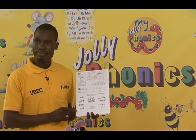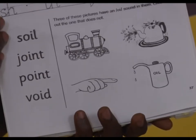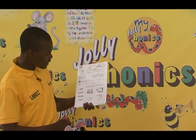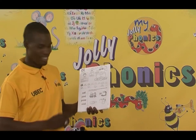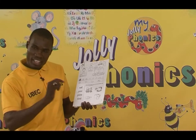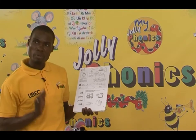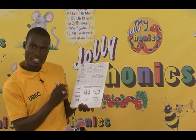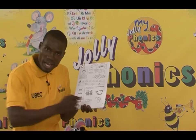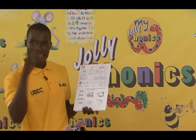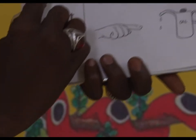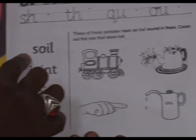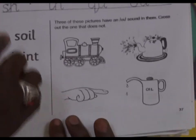Look at this blending section. We are going to read these words by blending the sounds. We are going to do what we call tracking the sounds. Use your purple book — put your fingers under the little sound beneath it, produce the sound, then track and read the word. Are you ready? One, two — S, OI, L together: Soil. Next one — J, OI, M, T together: Joined.